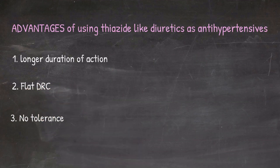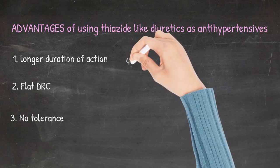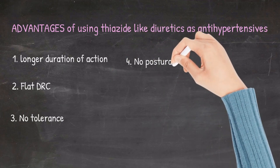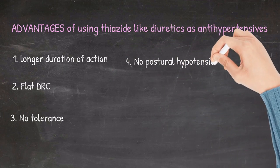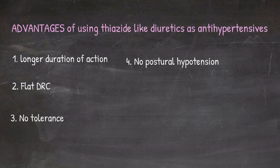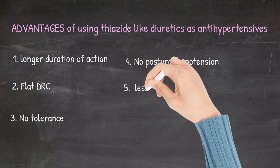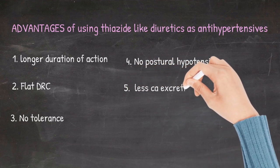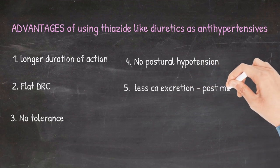The chances of postural hypotension is very low because the sympathetic system and the baroreceptor reflexes are spared. The loss of calcium in urine is inhibited, thus making thiazides beneficial in postmenopausal women who are especially susceptible to osteoporosis.